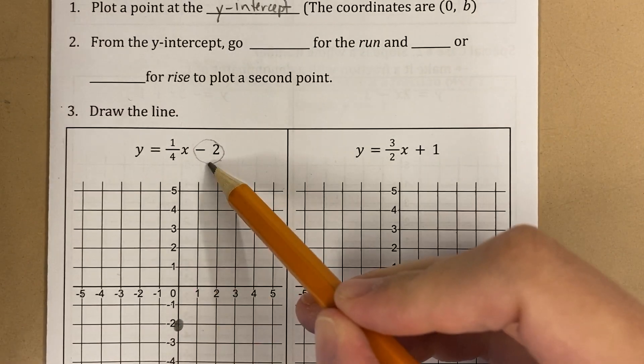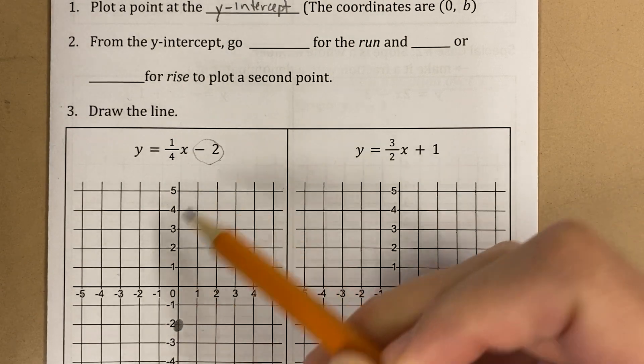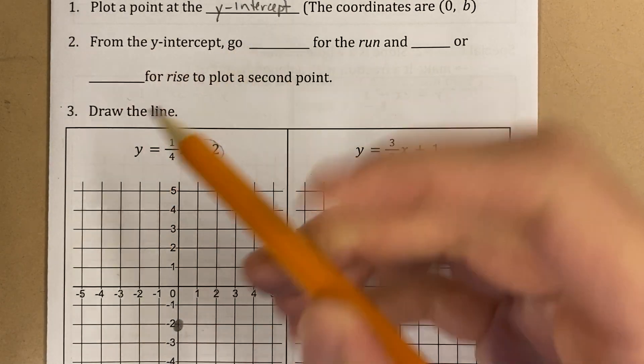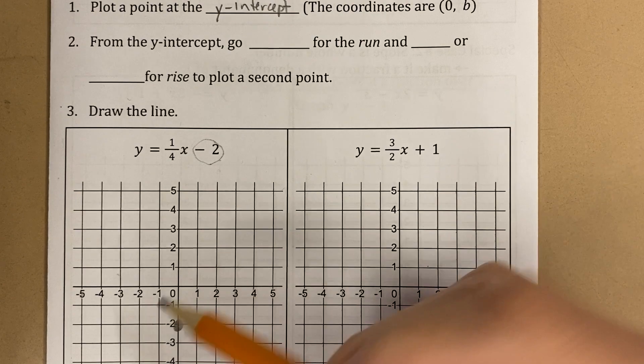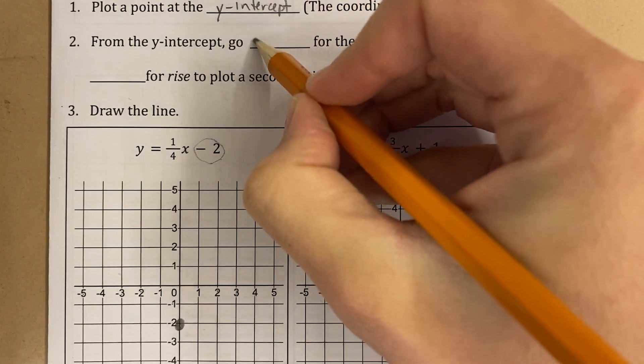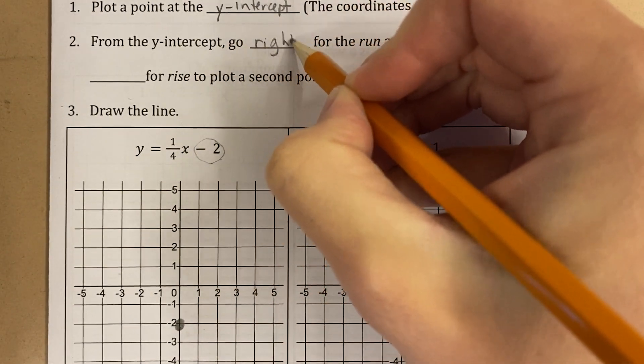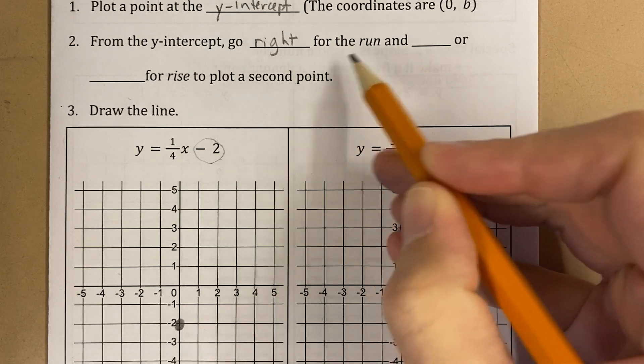So first, I use the y-intercept. I go to that point on the y-axis. Next, from the y-intercept, I'm going to start here, and I'm going to go right for the run. I'm going to run to the right.